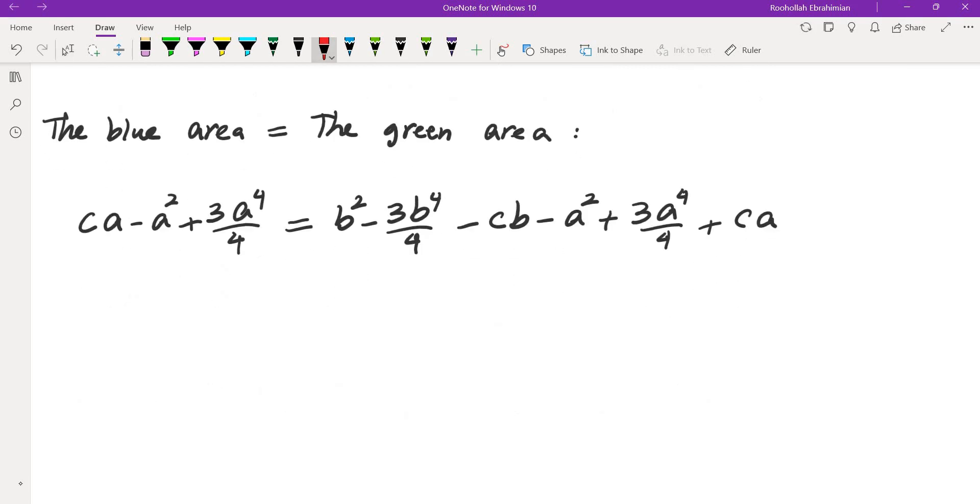So this fortunately simplifies quite a bit. The cAs cancel, minus a squared cancels, 3a to the fourth over 4 also cancels. So this becomes much simpler.